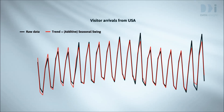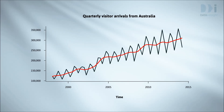At the end of part one we showed a plot of visitor arrivals from the US with the trend plus additive seasonal swings superimposed in red. There is a slight suggestion that the swings are too wide at the left hand end, where the series trend is low, and not wide enough where the series trend is high. This is much more dramatic with visitors from Australia — the seasonal swings are clearly smaller on the left where the trend is lower, and much bigger on the right where the trend is higher.